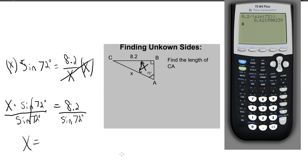So your final answer is that the side X or the side CA is 8.62 and that is it.